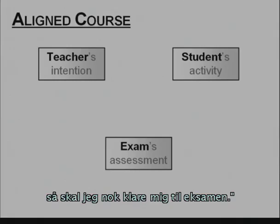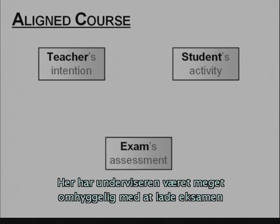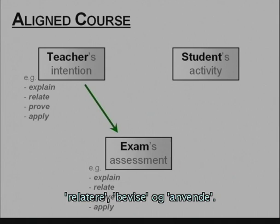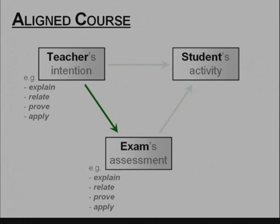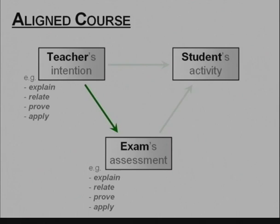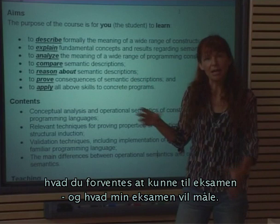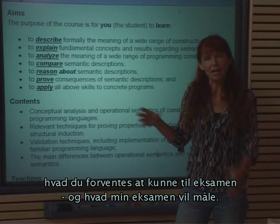Now let's have a look at an aligned course. Here, the teacher has taken great care in making the exam explicitly conform to his intentions, so that the exam now measures the ability to explain, relate, prove, and apply. Here, there is no shortcut for Robert. Whatever happens, he just ends up learning what the teacher is intending. "These are the course objectives, and also what you'll be expected to be able to do at the exam, and what my exam will measure. Furthermore, this is what we're going to reflect upon during the course, and what you'll be trained in doing during the entire course."